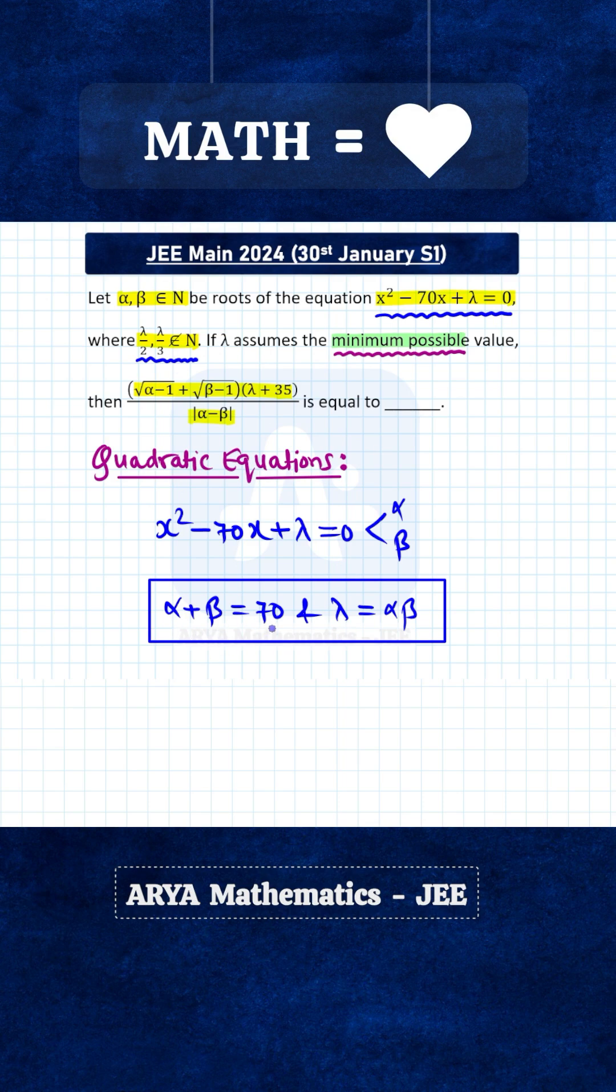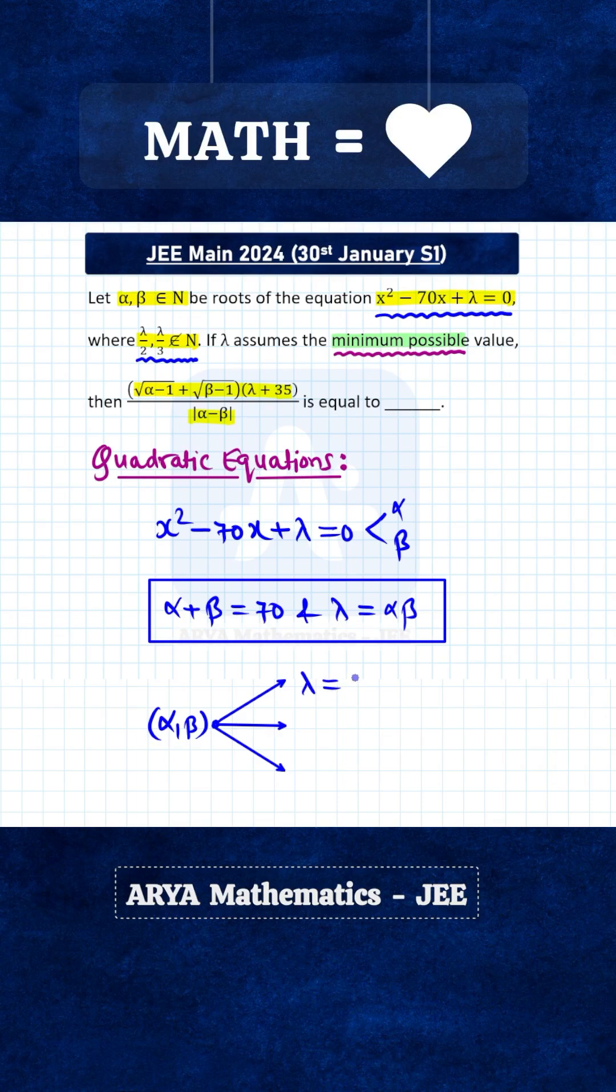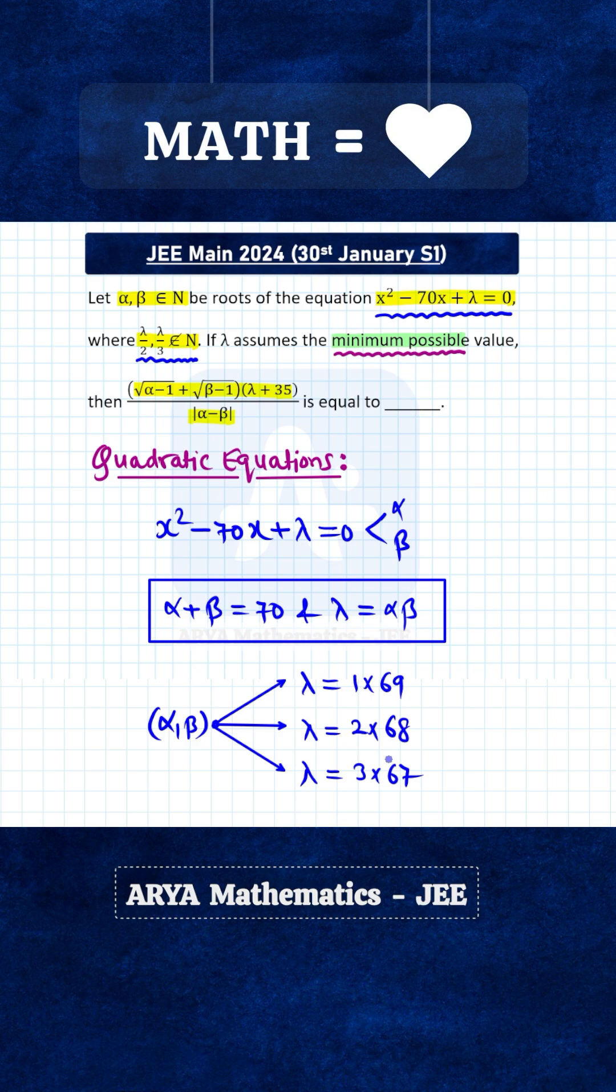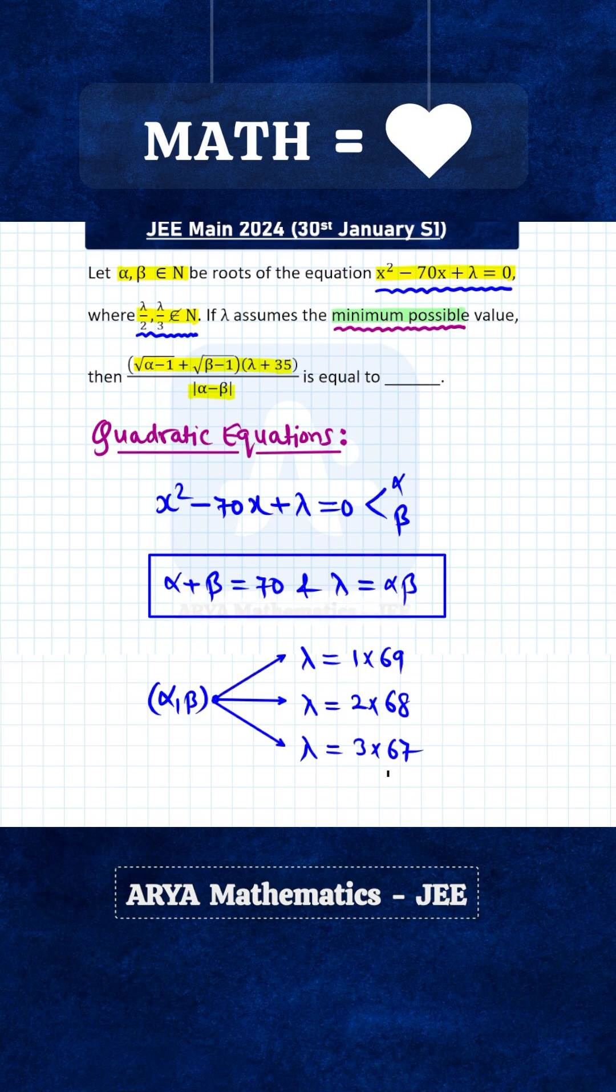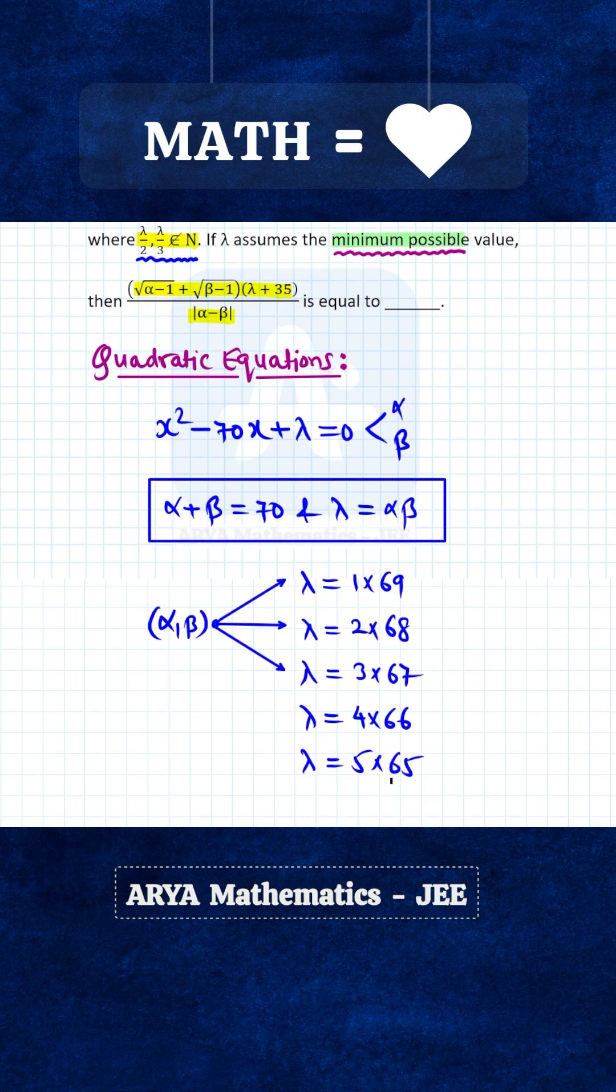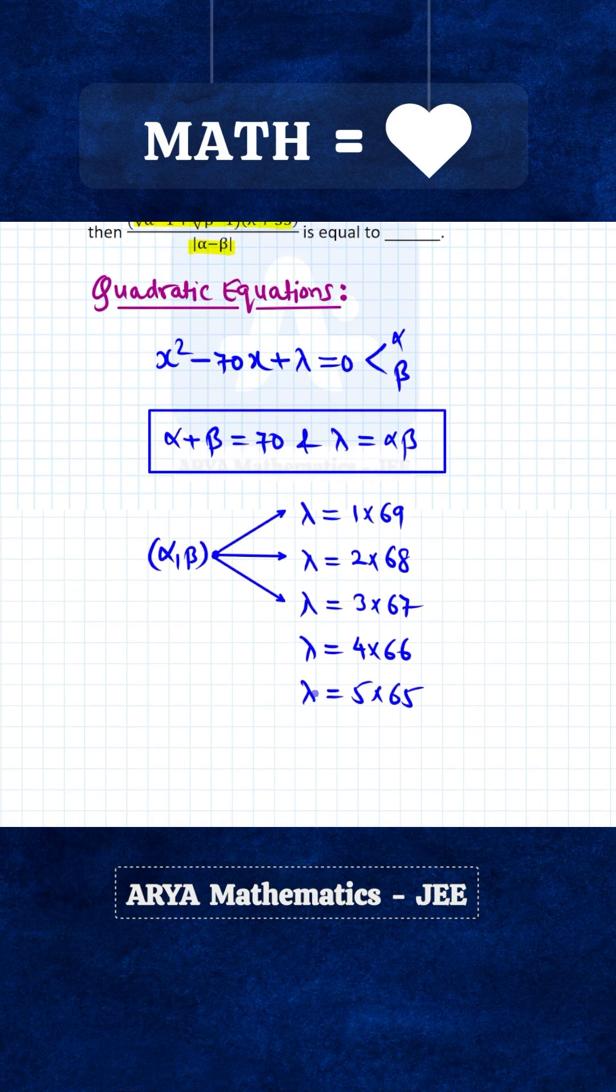There are different ways in which we can select two natural numbers such that their sum will be 70. One possibility is that we can take alpha as 1 and beta as 69. So in this case lambda, which is alpha into beta, will be 1 into 69. In this way there are a number of different possibilities. The last possibility is if we take equal roots, that means both roots are 35, so lambda will be 35 into 35.